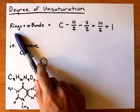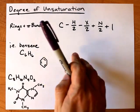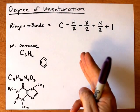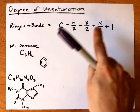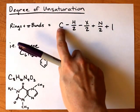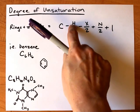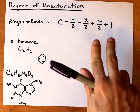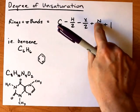The number of rings and pi bonds—that's one for a double bond or two for a triple bond—is going to be equal to this formula where we have the number of carbon atoms, the number of hydrogen atoms, the number of halogen atoms (F, Cl, Br, and I), and the number of nitrogen atoms.